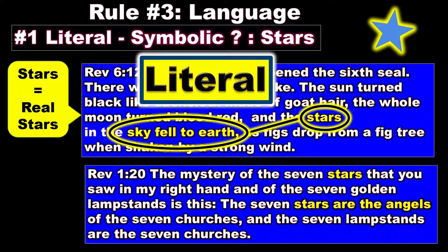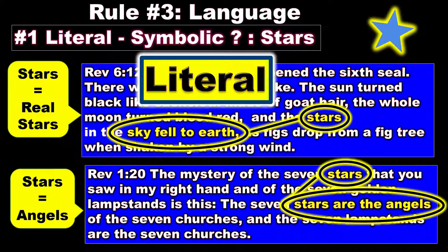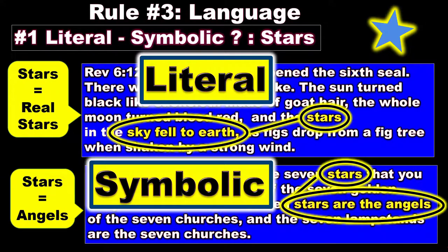'The mystery of the seven stars that you saw in my right hand, and of the seven golden lampstands is this: the seven stars are the seven angels of the seven churches, and the seven lampstands are seven churches.' Stars in this case are angels, and it's told to you right in the text. This is symbolic language.